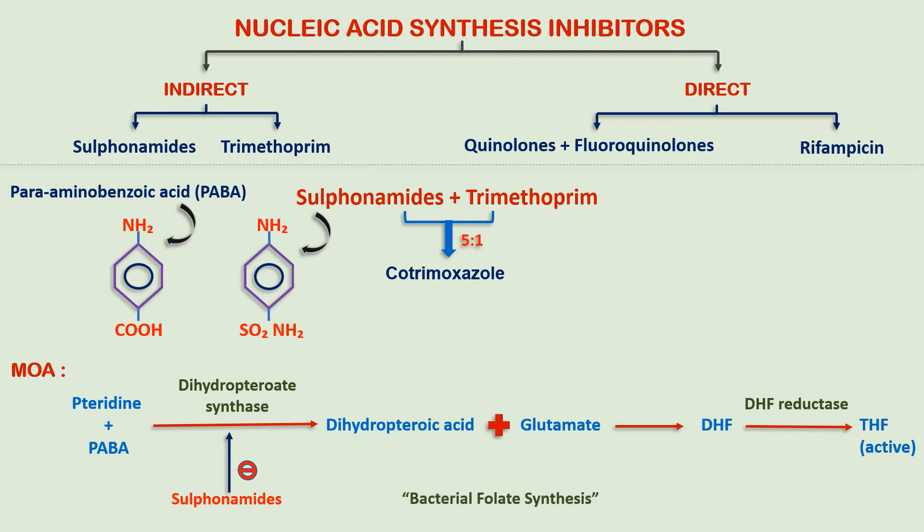One thing to remember is that unlike bacteria, humans do not synthesize folate — we get it from our diet. So sulfonamides will not have any interaction with folic acid in the human body. The next drug, trimethoprim, acts by inhibiting the enzyme dihydrofolate reductase.